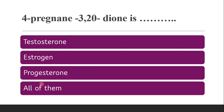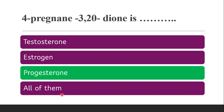Next question: pregnen-3,20-dione is dash. Since it is a dione (ketone), whether it is testosterone, estrogen, progesterone, or all of them. The correct answer is progesterone, because progesterone is derived from the pregnane nucleus.